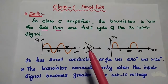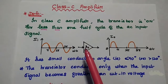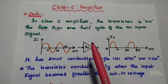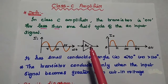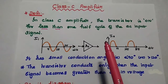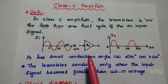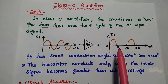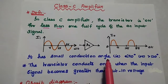Dear students, now we are going to discuss class C amplifier in detail. In class C amplifier, the transistor is on for less than one half cycle of the AC input signal. That means it has to produce the output signal for less than one half cycle of the AC input signal. This is the diagrammatic representation — here we can get the output current for less than half cycle of the input signal. So it has small conduction angle.